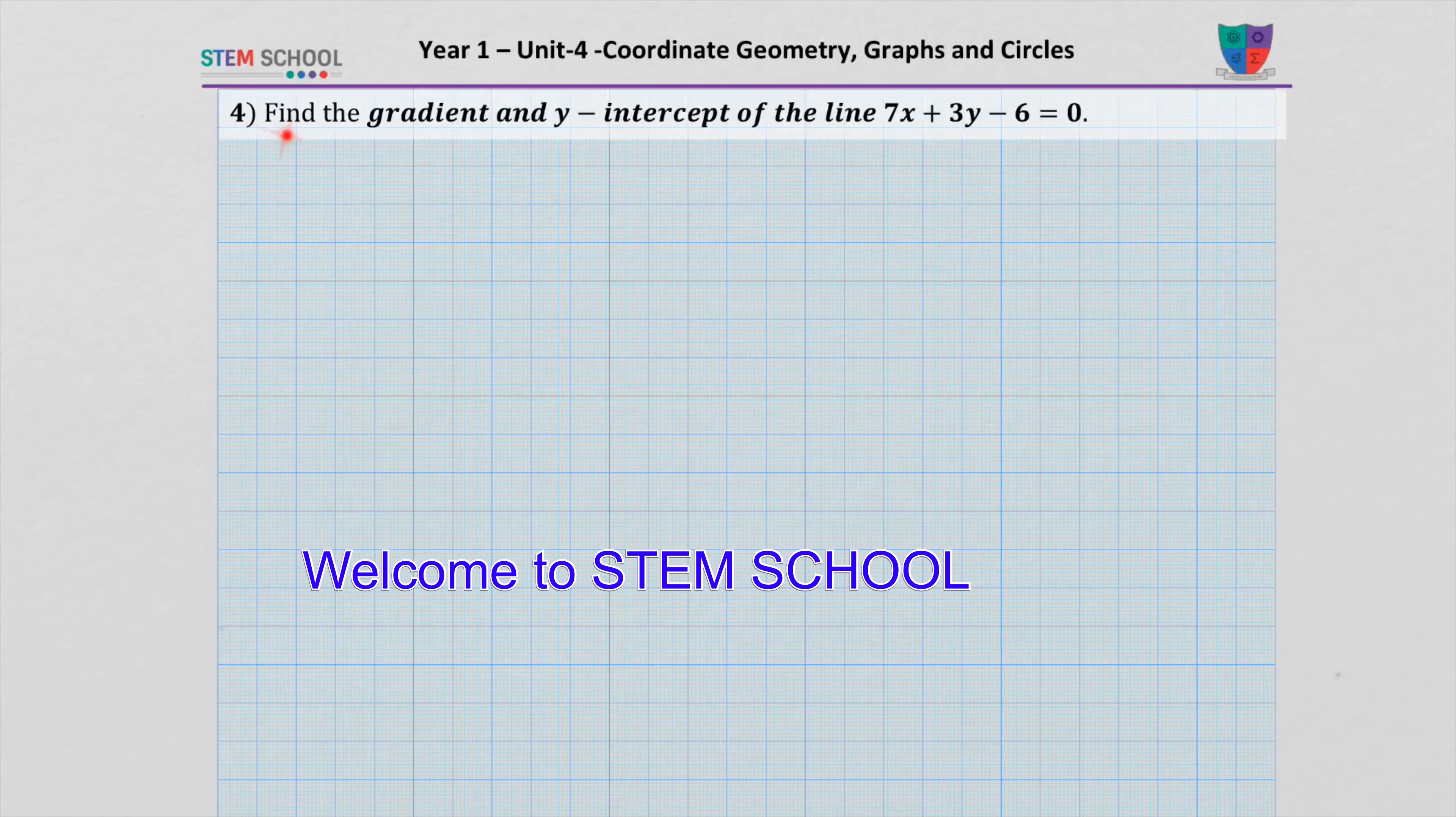Question 4, find the gradient and y-intercept of the line 7x plus 3y minus 6 equals 0.